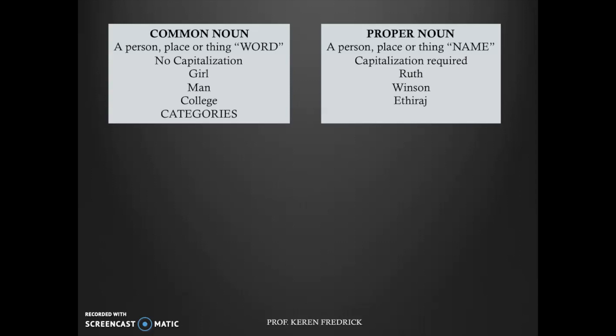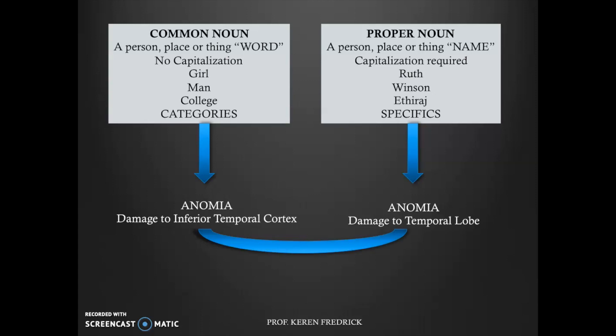With regards to common nouns, they are categories, and proper nouns are specifics. When there's damage in the inferior temporal cortex, we can have anomia for common nouns. On the other hand, if there is damage to the temporal lobe leaving out the inferior temporal cortex, then that can be deficits or anomia for proper nouns. If there is damage in both regions holistically, then that will be anomia for both common as well as proper nouns. This is confirmed by varied studies and proves that anomia for common nouns and proper nouns is centered on the temporal lobes.